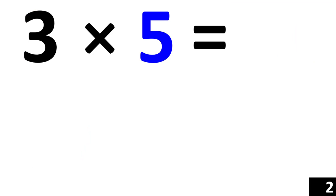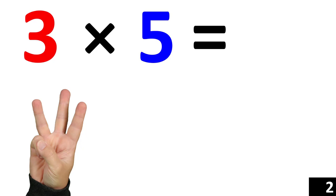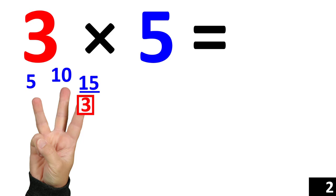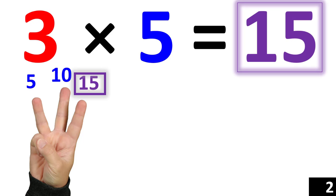3 times 5 is the same thing as counting by 5 three times. 5. 10. 15. 3 times 5 is equal to 15.